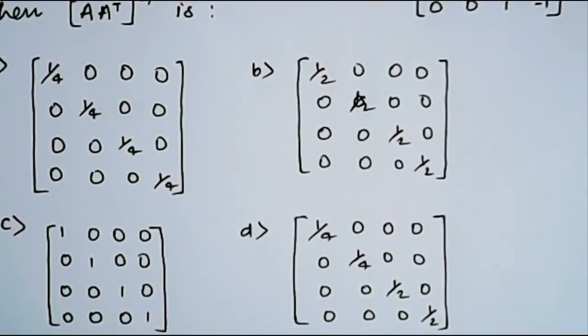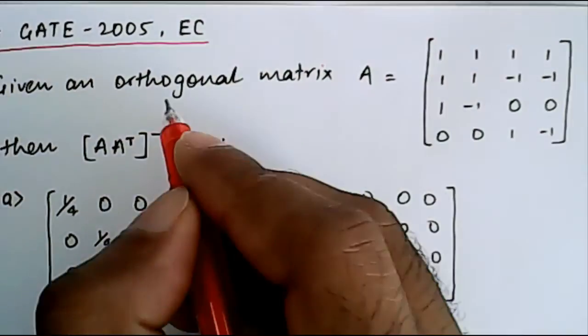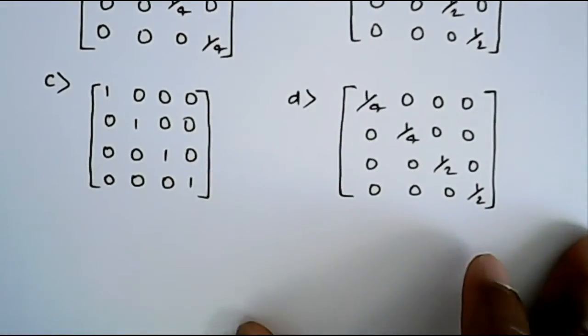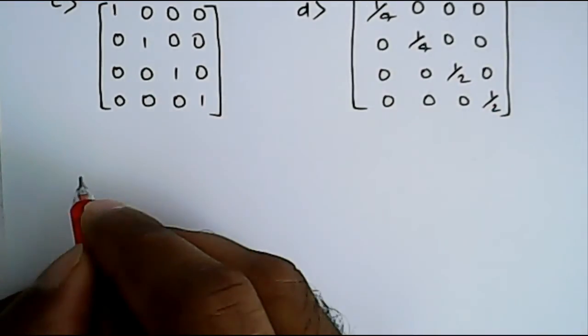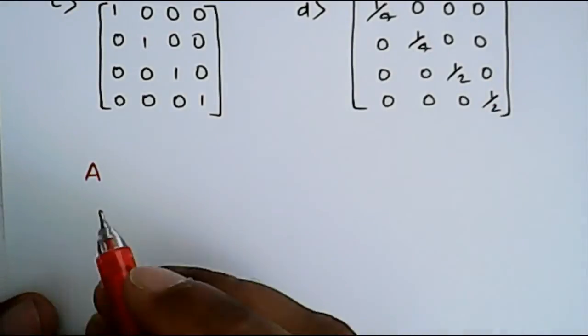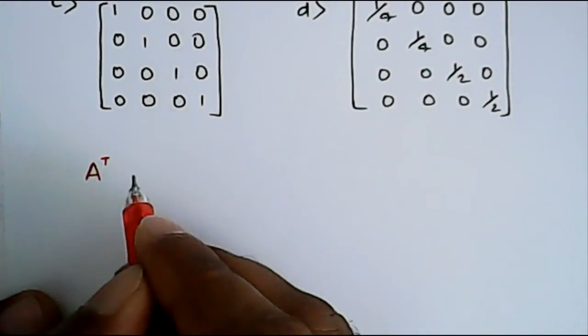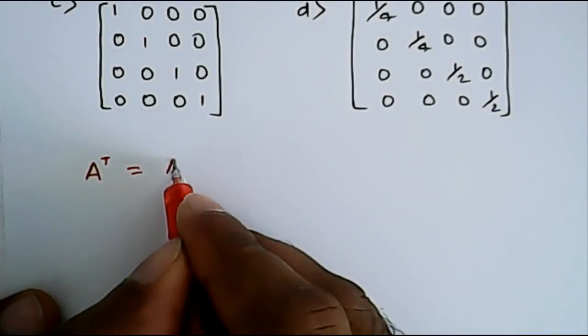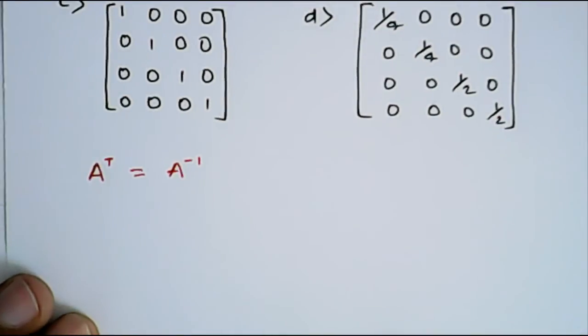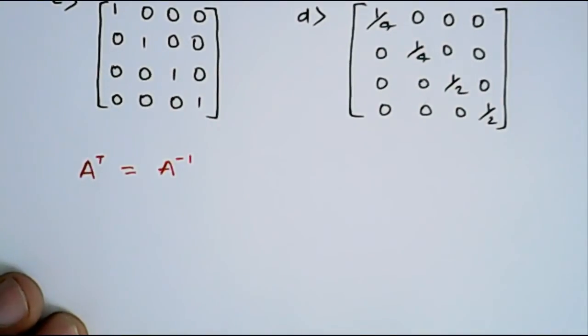So if you see, this is given that the matrix is orthogonal matrix. As we know from orthogonal matrix, for a matrix A if it is orthogonal, the transpose of matrix A will be equal to inverse from definition only. So we know that the transpose will be equal to inverse of matrix.